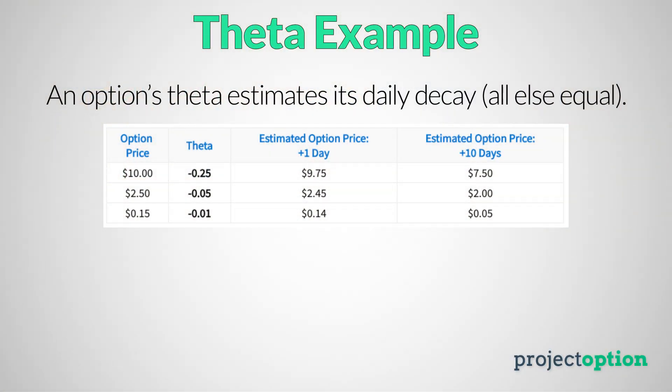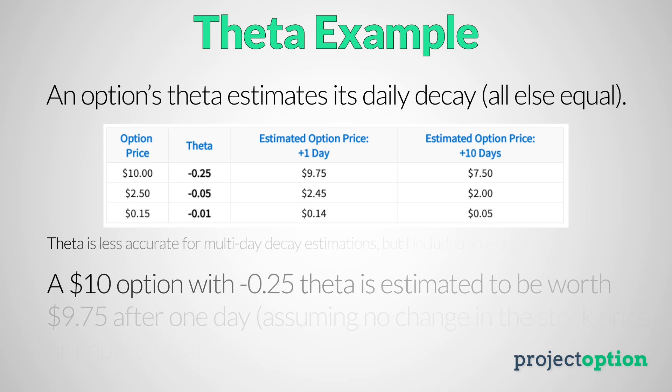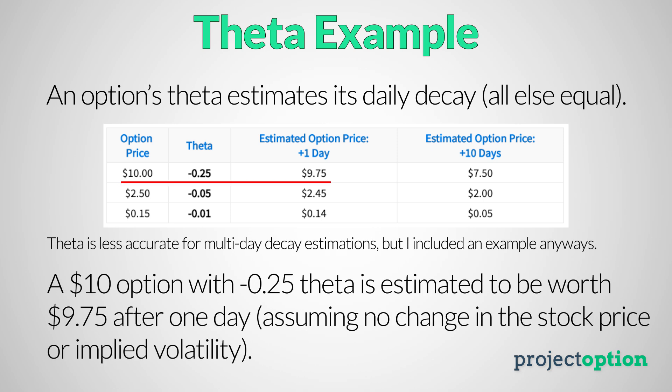As an example of what an option's theta represents: let's say we have a $10 option and the option's theta is negative 0.25. What this means is that with the passage of one day this option is expected to lose 25 cents of extrinsic value — because intrinsic value does not decay, only extrinsic value decays as time passes. So all else being equal, if one day passes, this $10 option is expected to be worth $9.75.